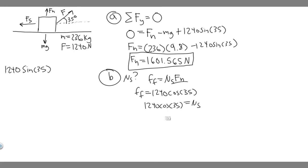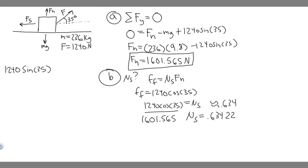So F sub F equals 1240 times the cosine of 35, and we divide both sides by F sub N to solve for mu sub S. F sub N is 1601.565 from earlier, since the normal force isn't changing in this problem. So mu sub S equals 1240 times cosine of 35 divided by 1601.565, which gives approximately 0.63422 — you can round to 0.634. There are no units for a coefficient of static friction. So 0.634 is your answer to Part B.